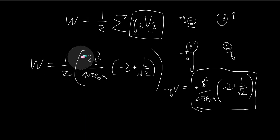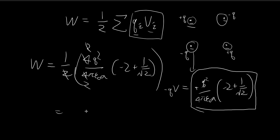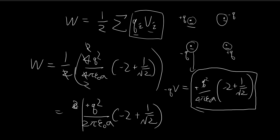So all we have to do is take one-half times four times the result from part A, since all four corners give the same QV. Replacing the factor of 2 with 4 and simplifying the constants, the total work is W equals Q squared divided by two pi epsilon A, times the quantity negative two plus one over the square root of two. This is the answer to part B.